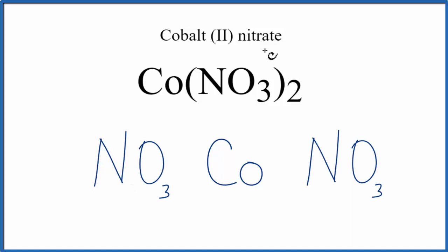We can look at the name for cobalt-2 nitrate, and we see this 2 here. That roman numeral 2 means the cobalt has a charge of 2+. For the NO3, the nitrate, we can look that up on a table of common polyatomic ions, and we'll see that nitrate has a negative 1 charge. Let's put a negative out here.